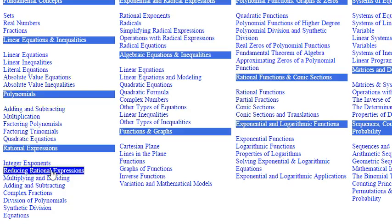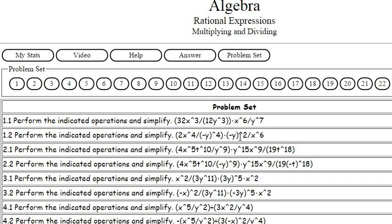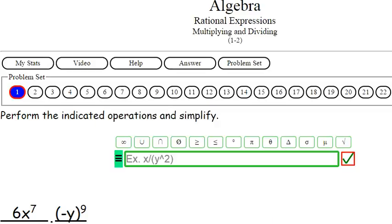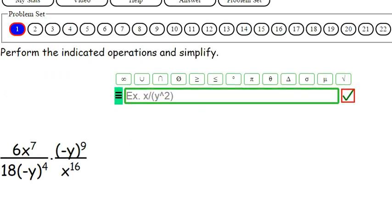Okay, we're here at GoToMath.com. Click on the Algebra. Let's go down to Multiplying and Dividing Rational Numbers. Click on 1.2 and let me scribble this down. We got 6x to the 7th over 18 negative y to the 4 times negative y to the 9 over x to the 16th.